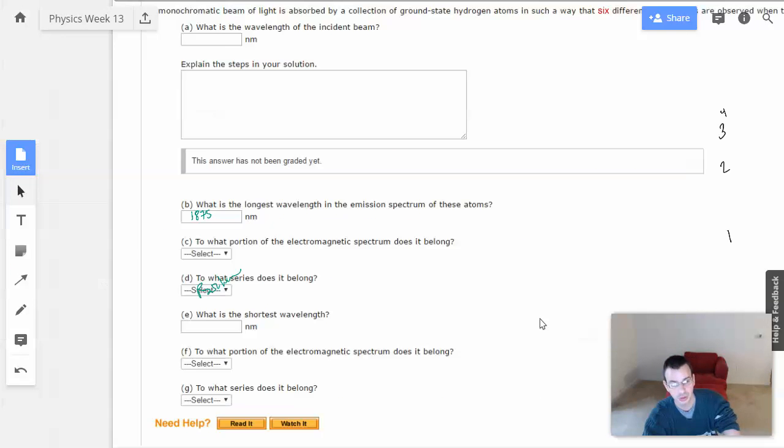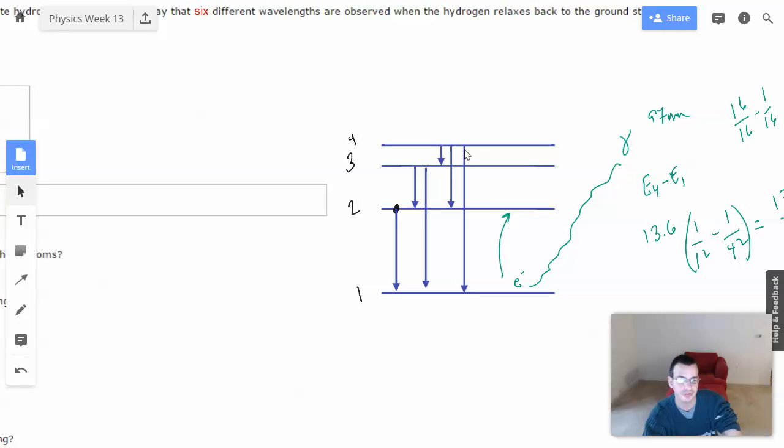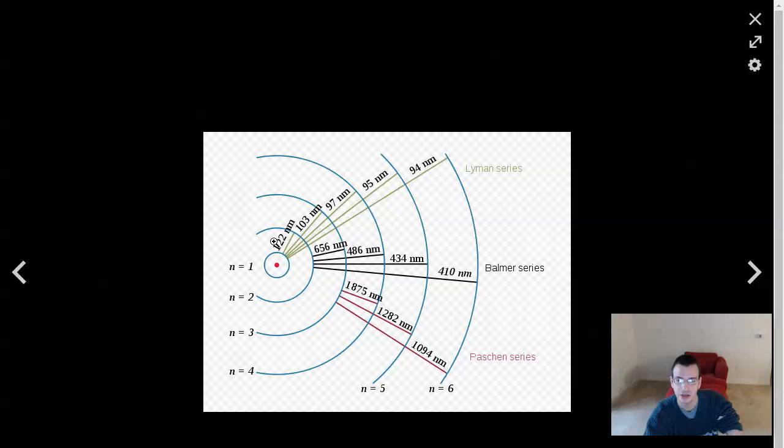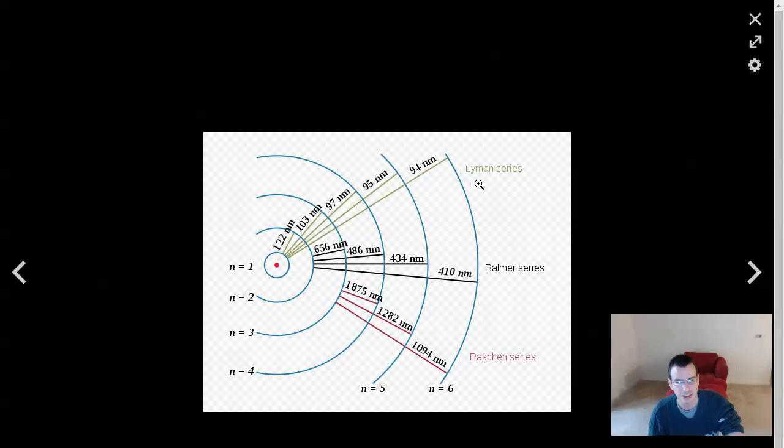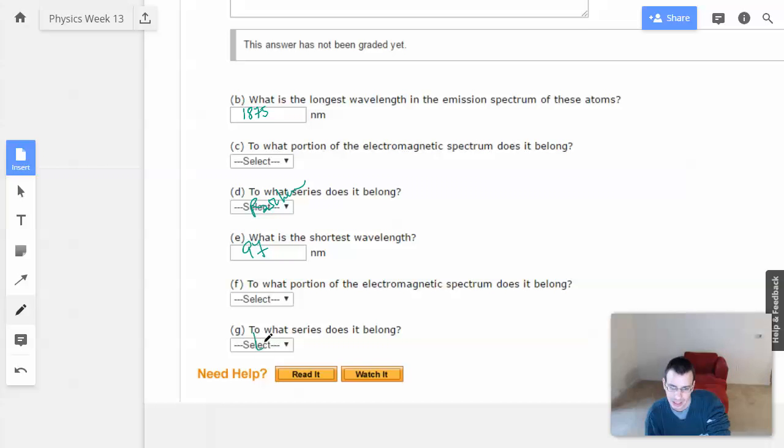What is the shortest wavelength? So shortest wavelength, i.e. the most energy, is going to be from four to one. Right. Four to one. So it will be the biggest jump. So that will be from four to one. 97. Oh, that makes sense. 97 nanometers. So basically, it means all the energy that we put into it is going to be all the energy that comes out. So 97 nanometers. What portion does this belong? Same thing. Let's go to Google. Electromagnetic spectrum. Look up the correct one that applies to whatever they're looking for. To what series does it belong? All right. That's a Lyman series. Lyman.